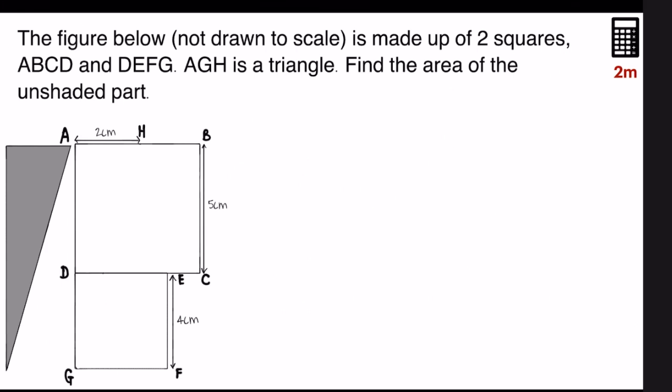So step number one, I'm going to find the area of the two squares. The formula to find the area of a square is length times breadth or length times length. In this case, the big square would be five times five, which equals twenty-five.